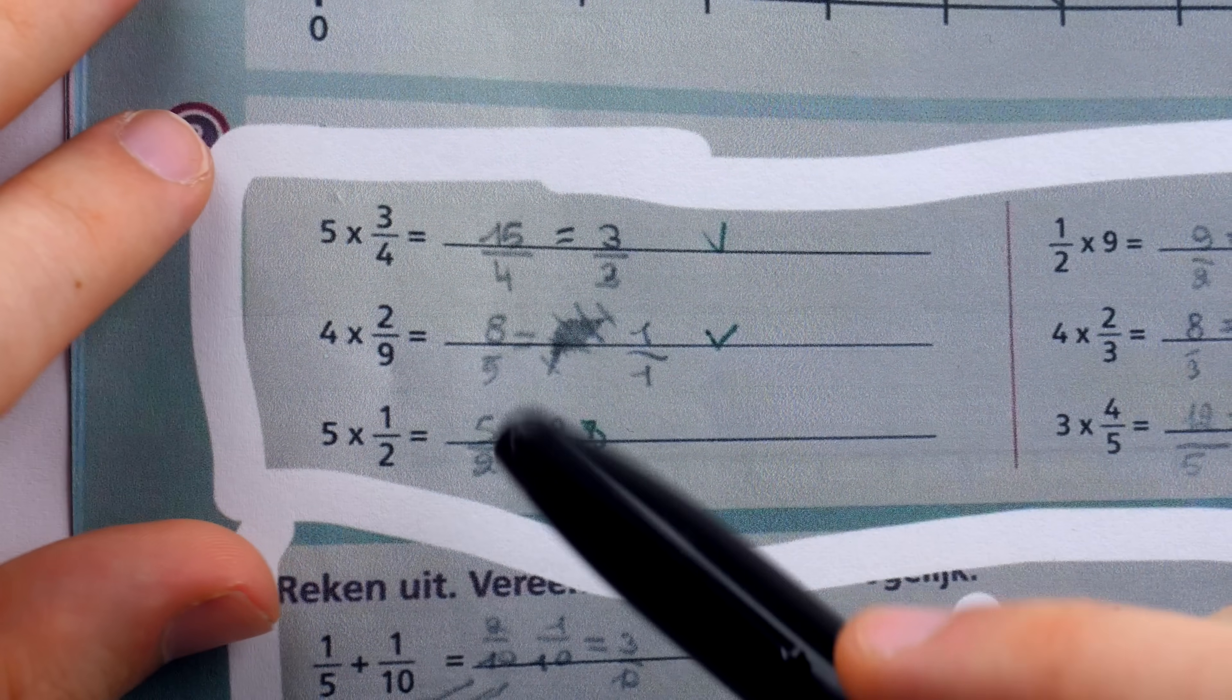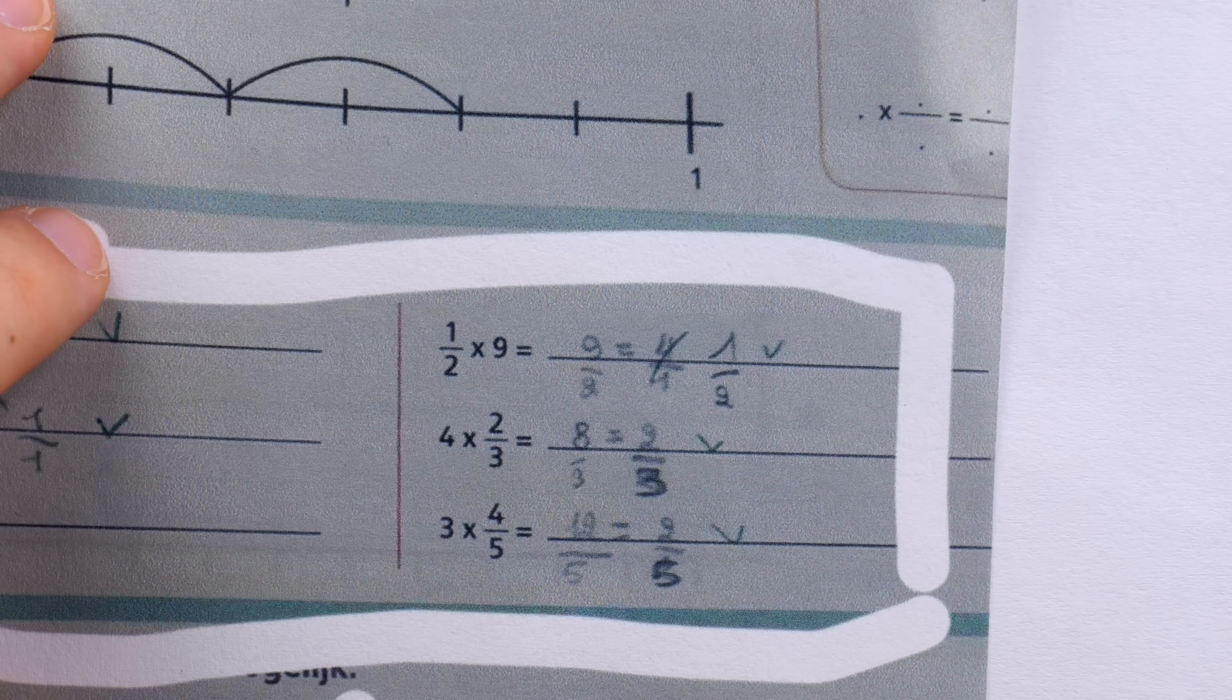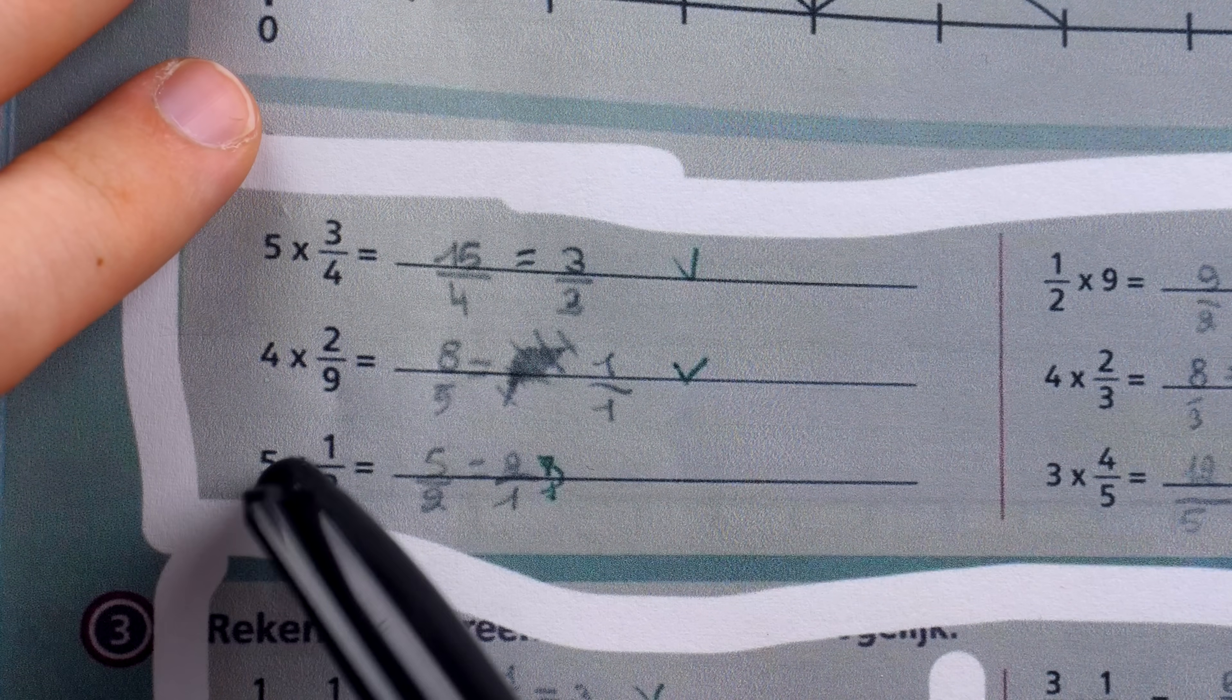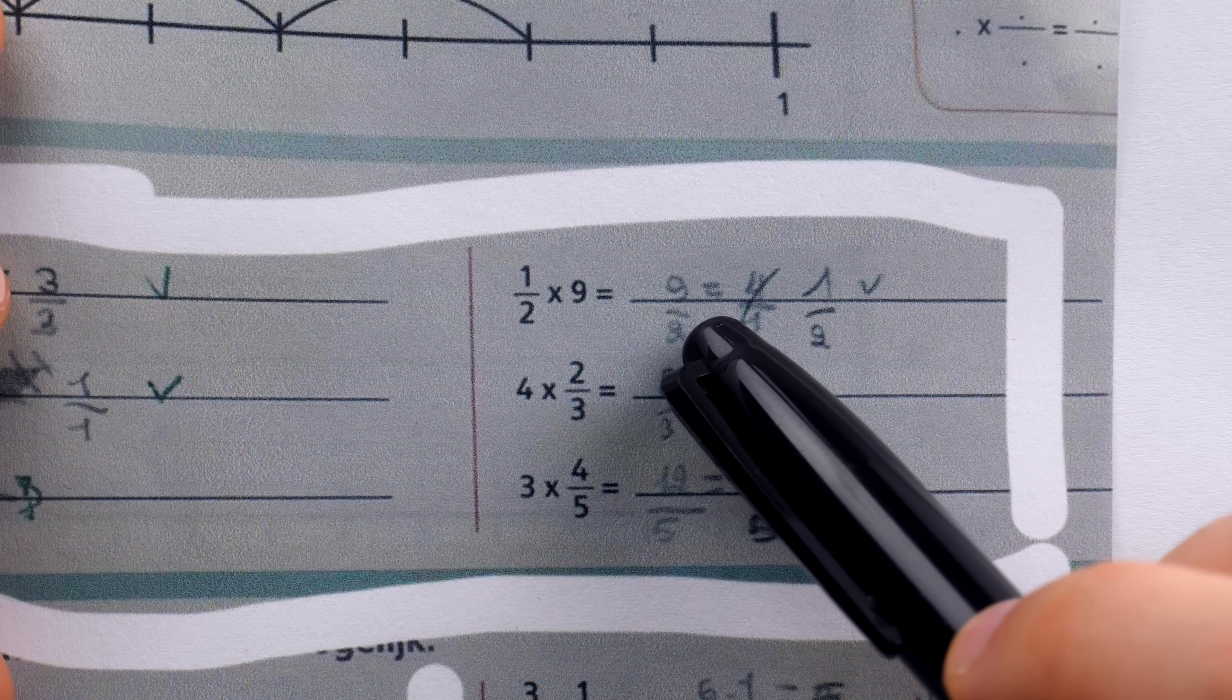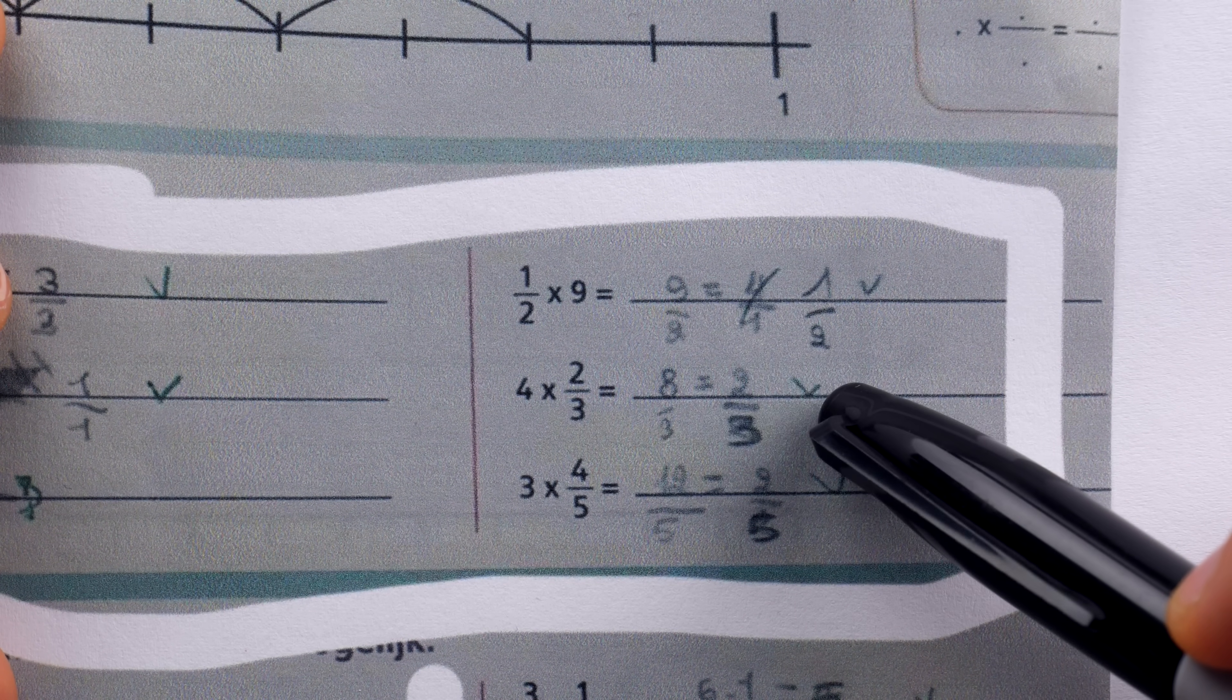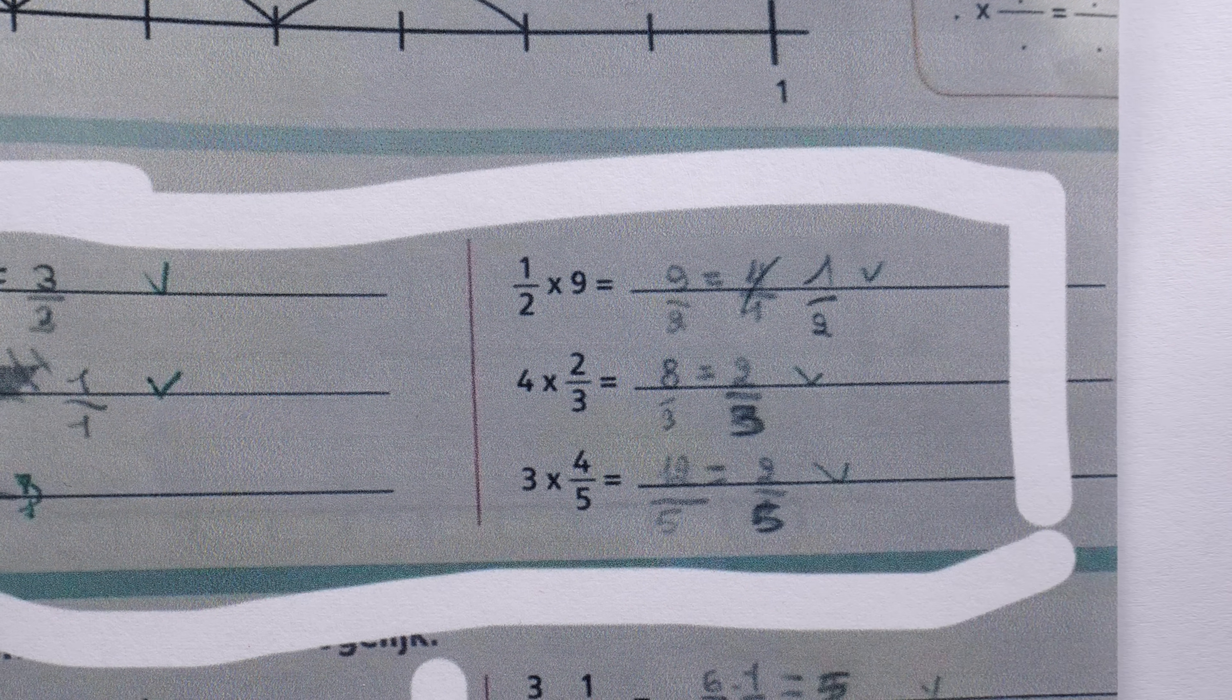So the teacher is saying no, 5 over 2 is not 2 over 1, it's in fact 1 over 2. Well, if you look at the next problem, you may begin to notice a pattern. The next problem is 1 half times 9, which is very similar to this one. The student writes 9 over 2, which is correct. Then the student writes that 9 over 2 equals 4 over 4, and 1 half is written next to it. The teacher has crossed out 4 over 4 and marked 1 half correct.